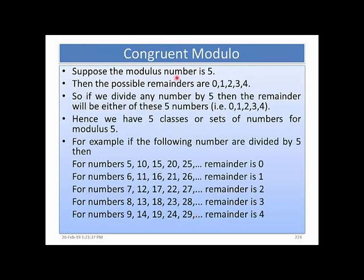Suppose the modulus number is 5. Then the possible remainders are 0, 1, 2, 3, and 4. If you divide any number by 5, the remainder will always be one of these five numbers. Hence we have 5 classes or sets of numbers for modulus 5.